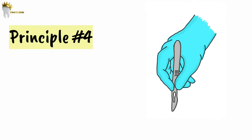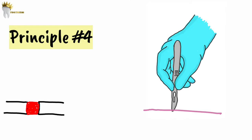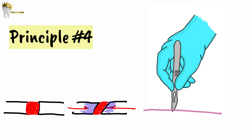The fourth principle is that when incising, the blade should be held perpendicular to the tissue surface. This results in squared wound edges, which are easy to reorient and close. If we make an oblique cut, it will be difficult to close the incision properly and it can also compromise the blood supply to the wound edges, which can result in necrosis of the wound edges.